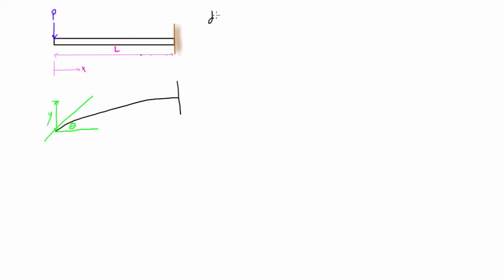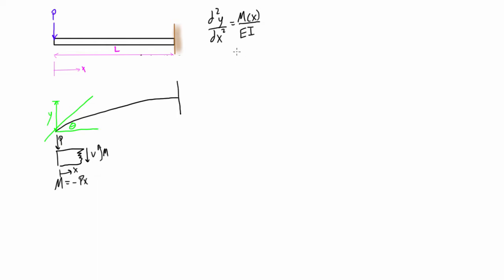From the last video, we have the expression D²Y/DX² equals the moment in terms of X over EI. We need to figure out what the moment in terms of X is. We take a virtual cut in the beam, knowing that we have P pushing down, and draw the shear force and internal bending moments with their positive sign conventions. From the sum of moments, the internal bending moment in terms of X is negative PX. We plug that in and bring over EI, so EI·D²Y/DX² equals negative PX.